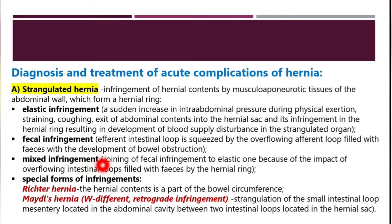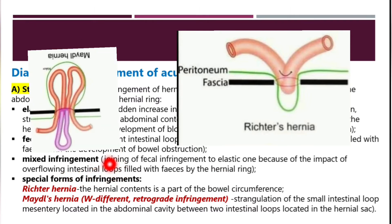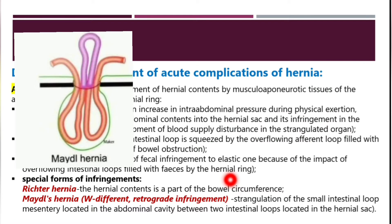The third type is mixed infringement, where both elastic and fecal infringement occur together. Special forms of infringement include Richter's hernia, where the hernia contents are part of the bowel circumference, and W-shaped or retrograde infringement, where strangulation of the small intestinal loop mesentery is located in the abdominal cavity between two intestinal loops located in the hernia sac.